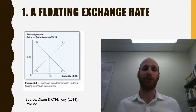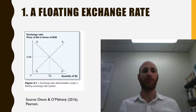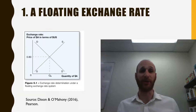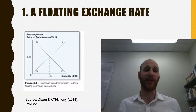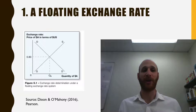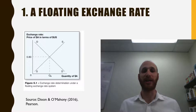Looking at the floating exchange rate diagram — courtesy of Dixon and Marnie — we simply have demand and supply where they intersect. That's equilibrium, here at 80 cents: one Australian dollar will get us 80 US cents. The price is one currency in terms of another, and the quantity is the Australian dollar under a floating system.